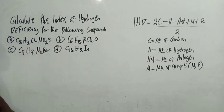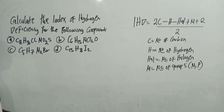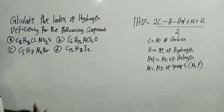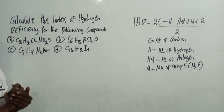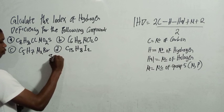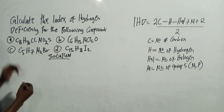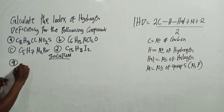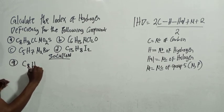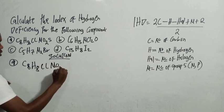Let's take this first example. At any point, you can pause the video and solve it yourself to get the answer. The compound is CH3ClO2P — we have carbon, hydrogen, chlorine, oxygen, and phosphorus.